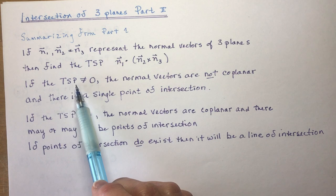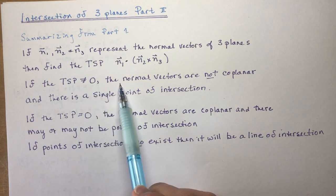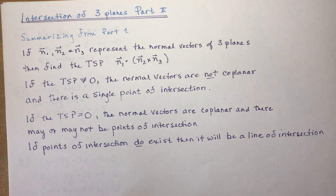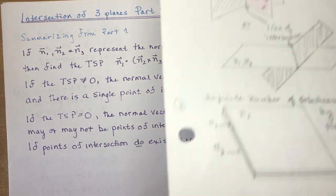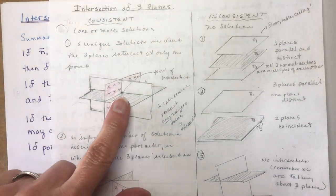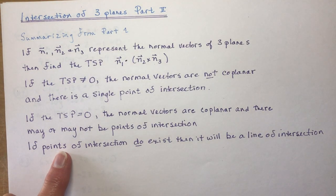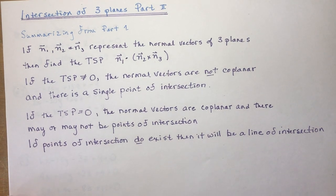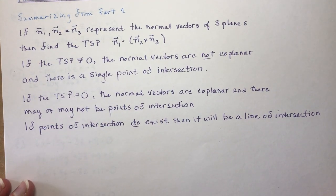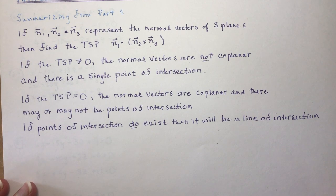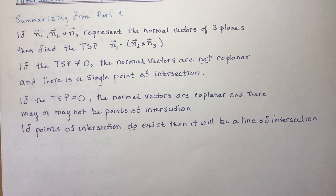If the triple scalar product is not equal to zero, that's what we did yesterday with our first example, that's when you get the vectors are not coplanar and there's a single point of intersection like that. If the triple scalar product is equal to zero, then the normal vectors are coplanar and there may or may not be points of intersection. If there are points of intersection, then it will be a line.